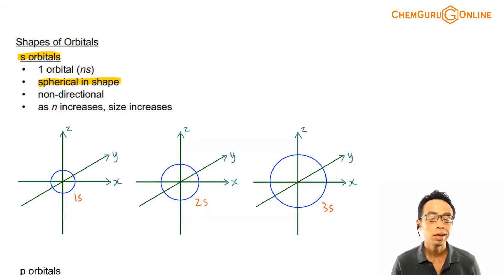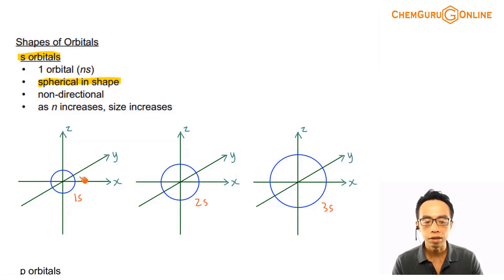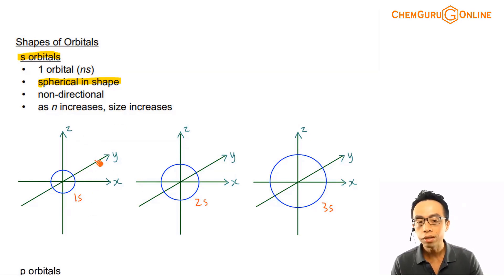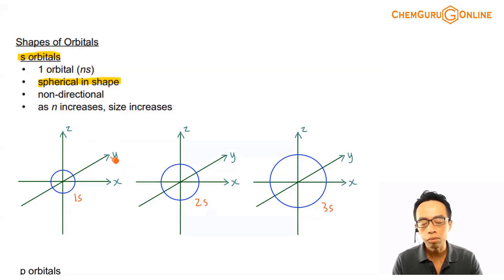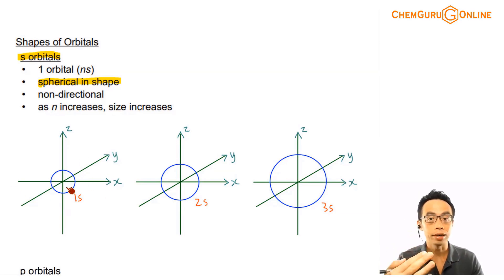So S subshell — there's only one orbital. S orbital is spherical, so we just draw a circle. I just put an axis. In chemistry, we're not so strict about the direction of the axis, but typically left and right will be the X axis, up and down will be the Z axis, and in and out will be the Y axis. So you just stick to whatever your school is using. I just need to draw a circle to represent your S orbital.